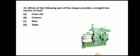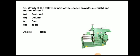Next question: which part of the shaper provides straight line motion of the tool? The answer is the RAM. The RAM provides straight line motion to the cutting tool.